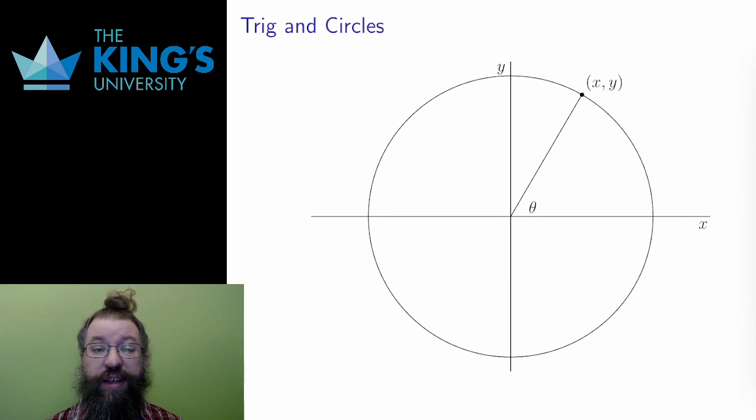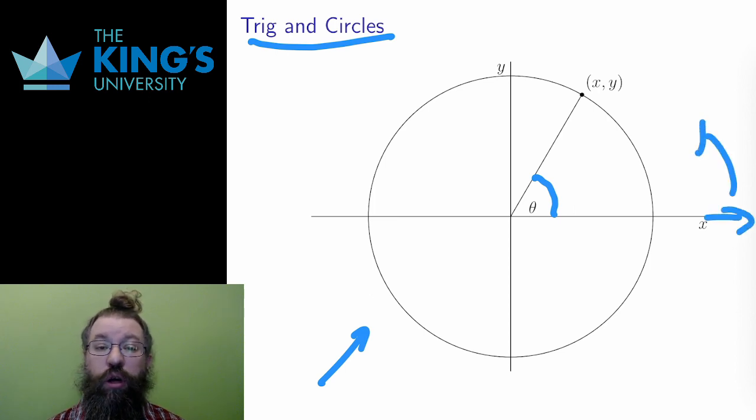For our purposes, it's much better to associate trig functions with a circle. Consider a circle of radius 1, as I've drawn here. A point on a circle can be determined by an angle from a fixed reference, and the conventional reference is the positive x-axis, with the movement of the angle being counterclockwise.